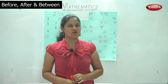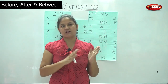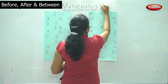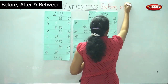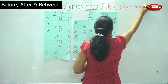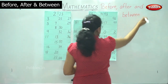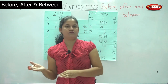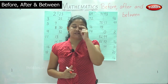Today we will be seeing the concept of before, after and between. What number comes before, what number comes after, and what number comes between two numbers. I have numbers randomly written and we are going to see what number comes before a particular number, what number comes after a particular number, and what number comes between two numbers. Are you ready, children?